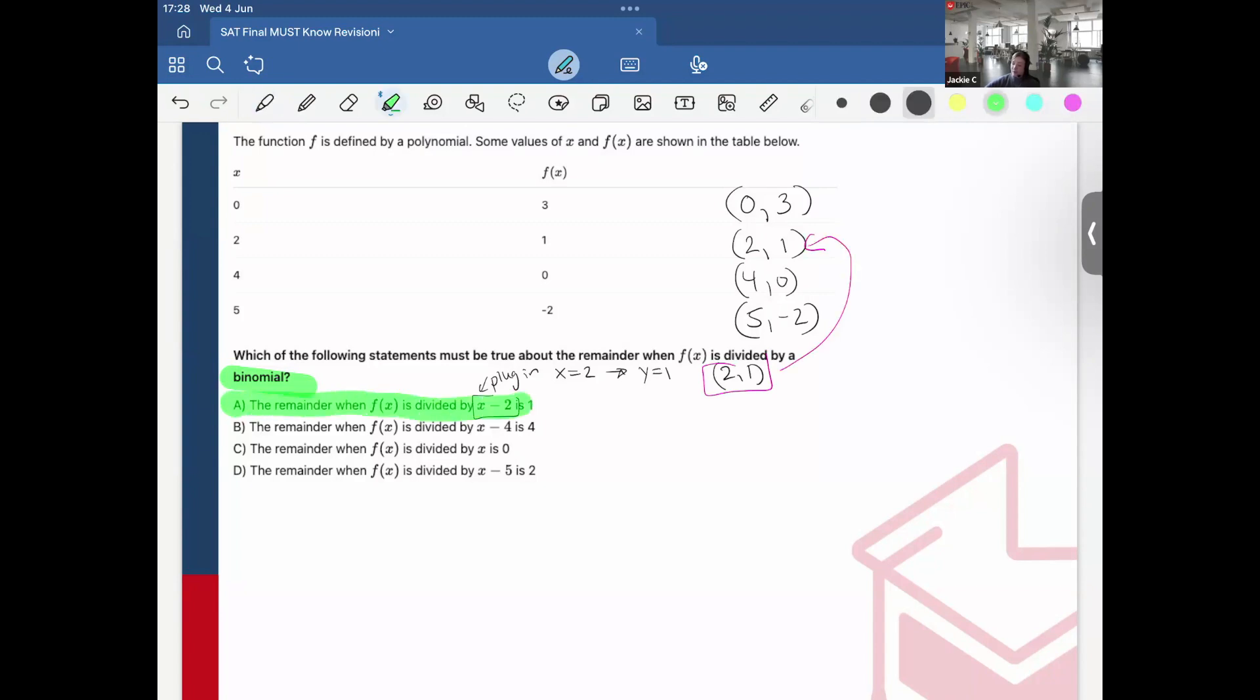So I already have the answer. But just to show, this would be that when x equals 4, the remainder is 4, so that it would be (4, 4). That one is not a match, right? It's 4. It should be 0.